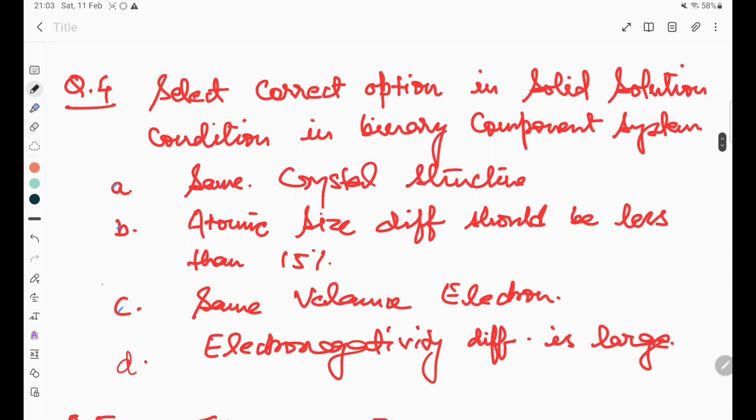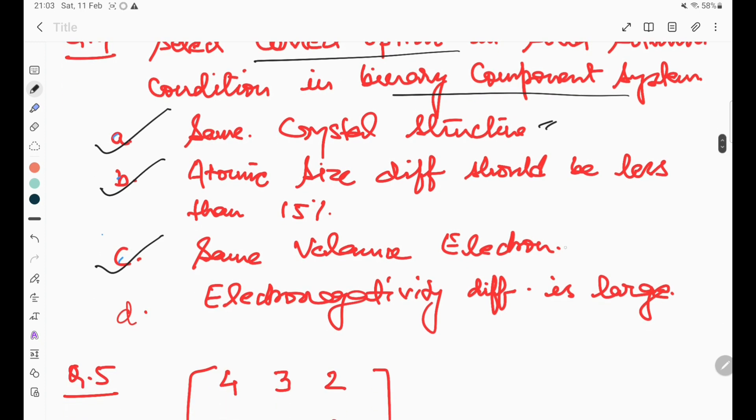In the fourth question, select correct options in solid solution condition in binary component system. This also has more than one answer. Part A, B, and C are the right answers. Part A: same crystal structure. Part B: atomic size difference should be less than 15 percent. Part C: same valency electron. Electronegativity difference is large is wrong; it should also be less.